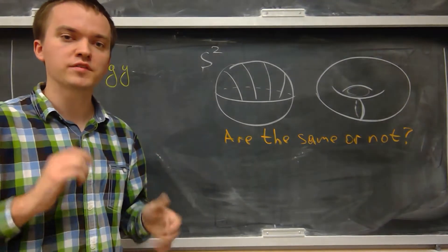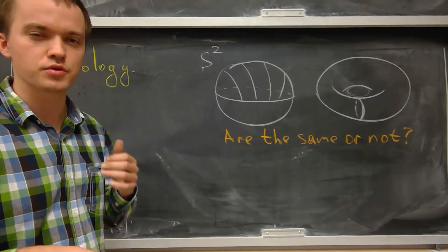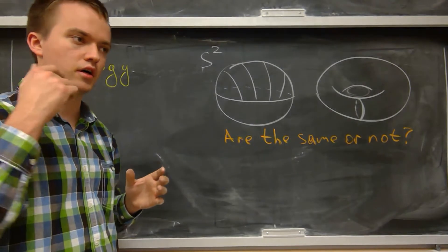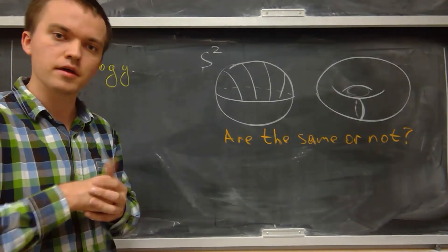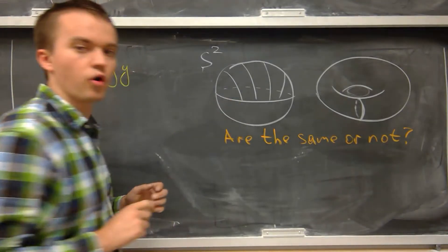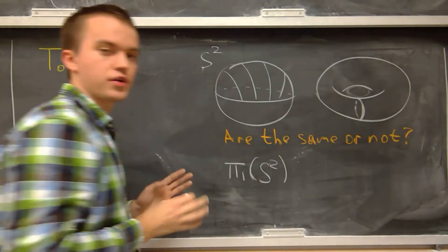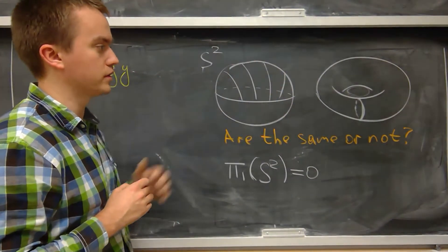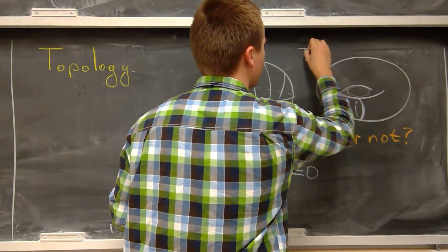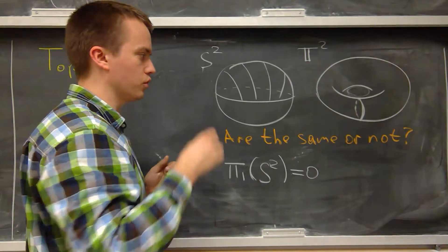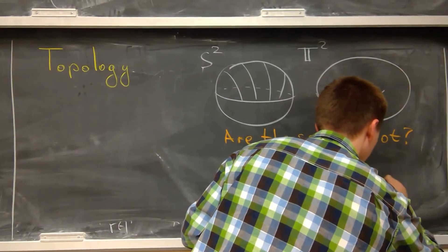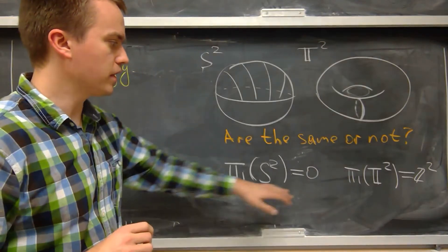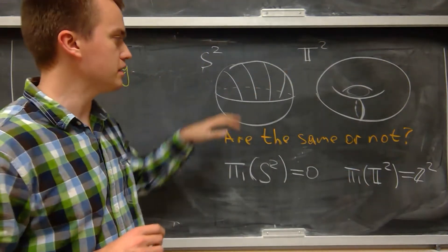One such tool is called algebraic topology, where we use algebraic structures to distinguish whether two surfaces are the same. One such abstract object is called the fundamental group. I will show in a future video that the fundamental group of S² is trivial, equal to zero, but the fundamental group of the torus T² equals Z × Z.